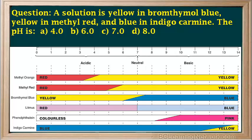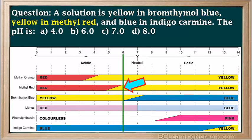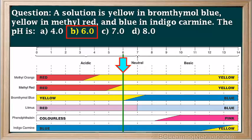Here's a common type of multiple choice question you might see regarding indicators. A solution is yellow in bromothymol blue, yellow in methyl red, and blue in indigo carmine. Is the pH A) 4, B) 6, C) 7, or D) 8? The best way to approach this is to draw a vertical line through the chart at each given pH value and see which one matches the results. We can see that all three indicators are the given colors at a pH of 6 — bromothymol blue is yellow, methyl red is yellow, and indigo carmine is blue. So answer B is correct: the pH would be 6.